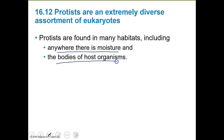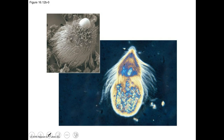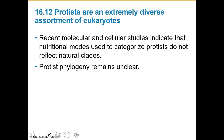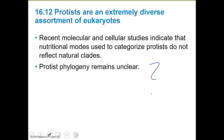We find them in the bodies of host organisms, so they're all over the place. Recent molecular and cellular studies indicate that the nutritional modes used to categorize protists don't reflect natural clades, so their phylogeny and evolutionary relationships aren't really clear. If you're into taxonomy, protists are great for that because we're still figuring it out.